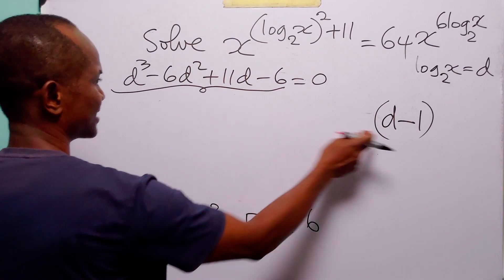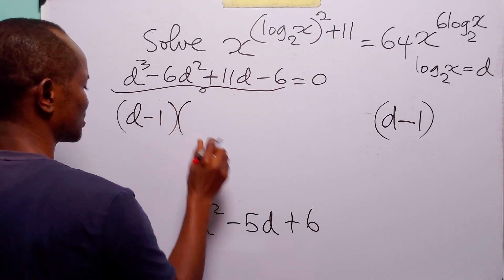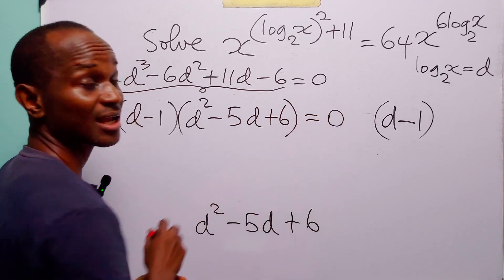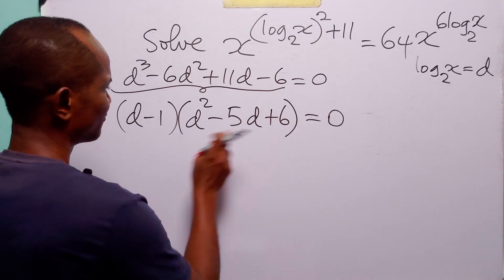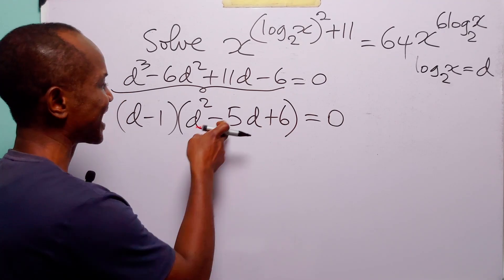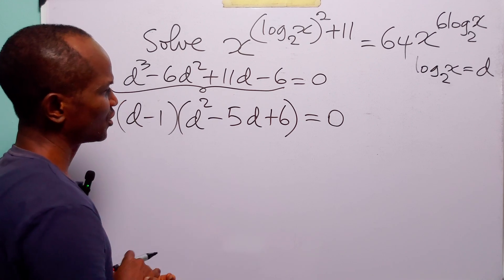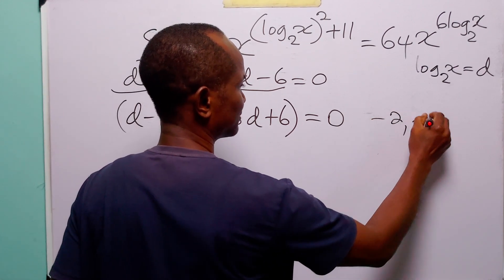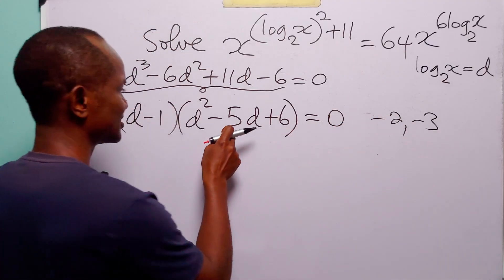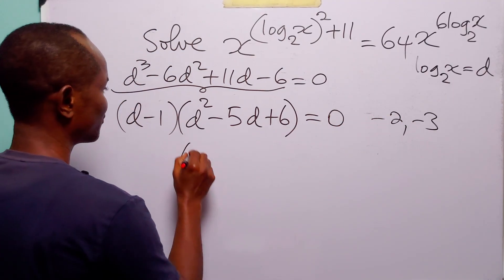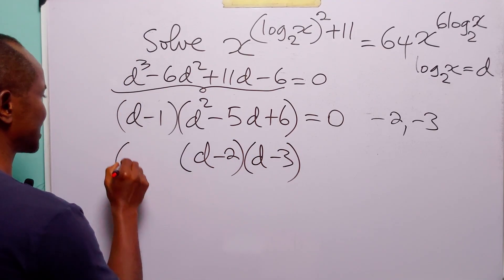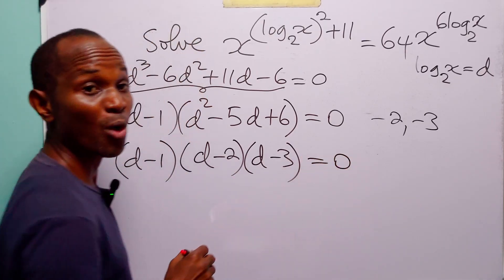Now we can write this left-hand side as d minus 1, multiplied by d squared minus 5d plus 6, equals 0. We can further factorize d squared minus 5d plus 6 by finding factors of positive 6 that add up to minus 5 — those are minus 2 and minus 3. So we have d minus 1, times d minus 2, times d minus 3, all equal to 0.